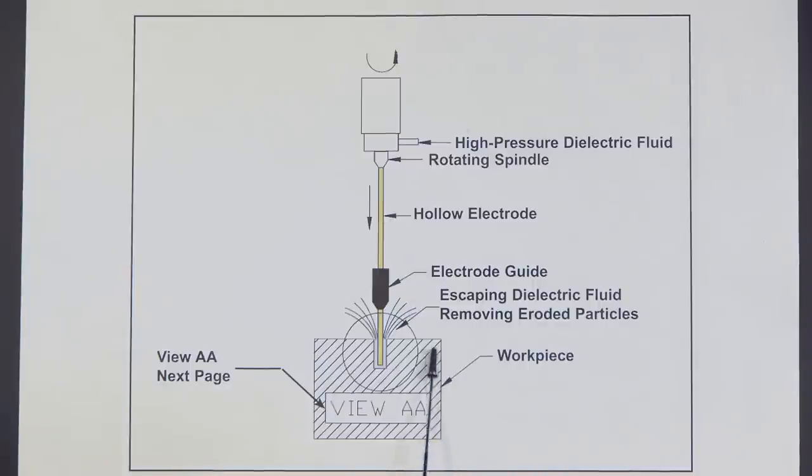This is the workpiece, and here we have high-pressure dielectric fluid entering into the electrode. The pressure is up to ten times more than RAM EDM, and that also helps to stiffen the electrode. The spindle is rotating, so it's constantly rotating in this hollow electrode. That's where the dielectric fluid is coming out. Here the escaping dielectric fluid is removing eroded particles. And that's important.